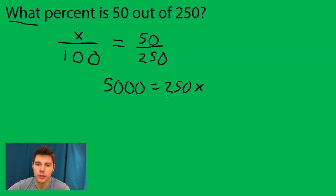And now we just solve for x. Divide both sides by 250. And 5,000 divided by 250 is 20.